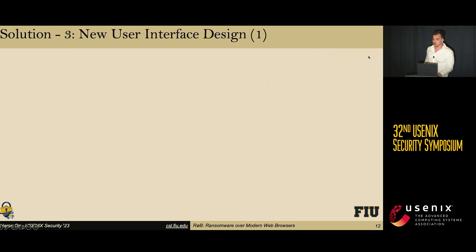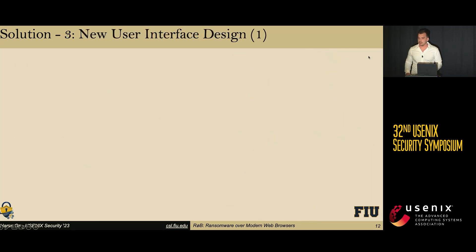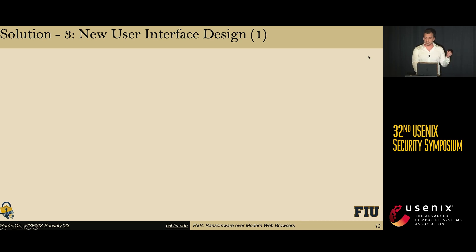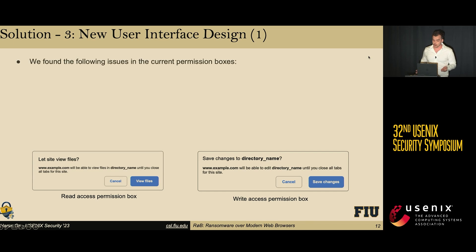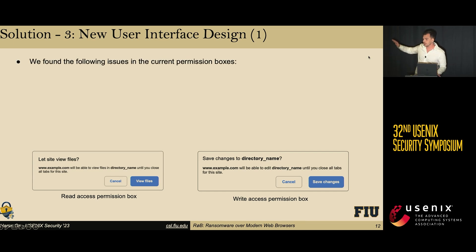In our third defense solution, which operates at the user level, we implemented and designed a new user interface. During our analysis, we found the following issues in the current permission boxes implemented in the FSA API. First of all, they look very similar, so users cannot differentiate between these permission boxes.